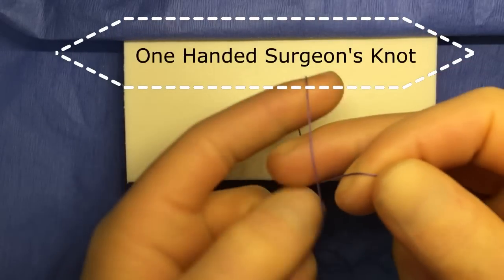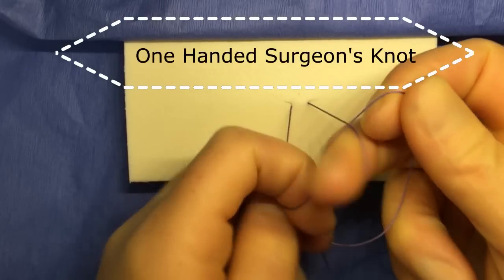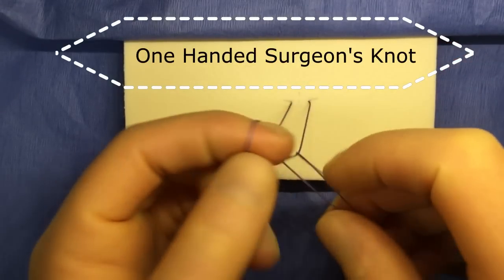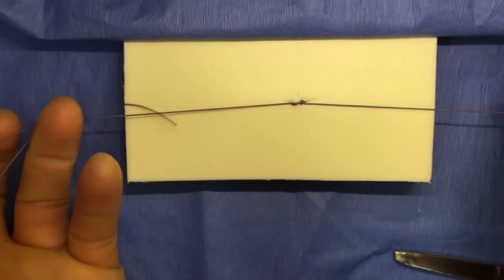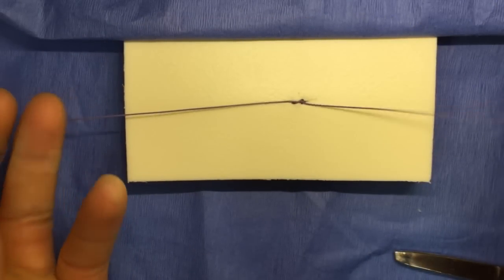My name is Graham Stroob and I'm an ENT resident at the University of Washington. Today I'm going to teach you how to throw a one-handed surgeon's knot, which was taught to me by Dr. Scott Bevins, one of our former head and neck fellows.